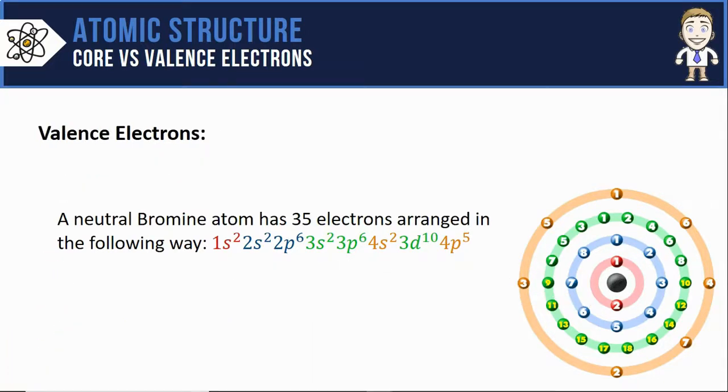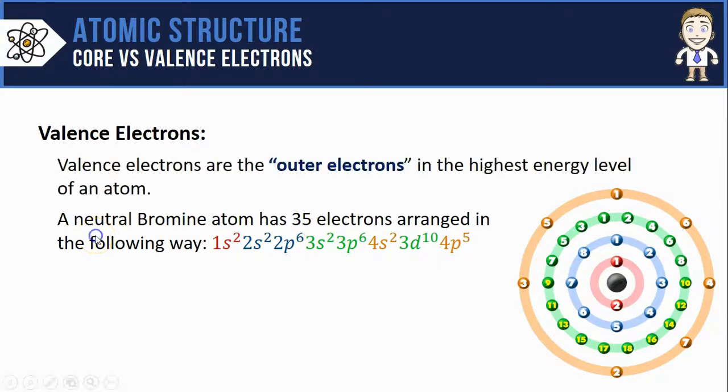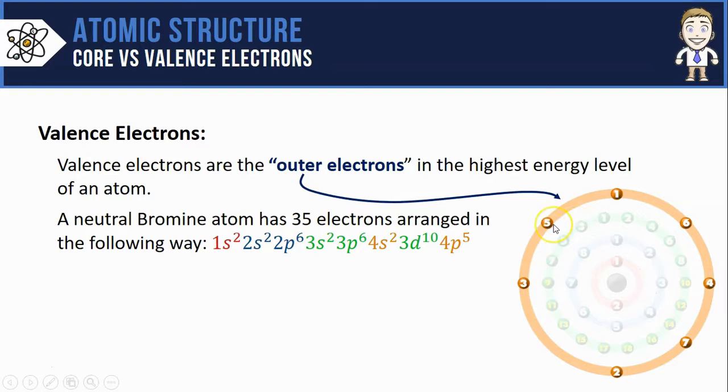So let's get into it and start with valence electrons. You've probably heard of these before. They're simply the outermost electrons in the highest energy level of an atom. They're pretty simple to spot on this Bohr model. They would just be the ones in the outermost energy level or the outermost ring.